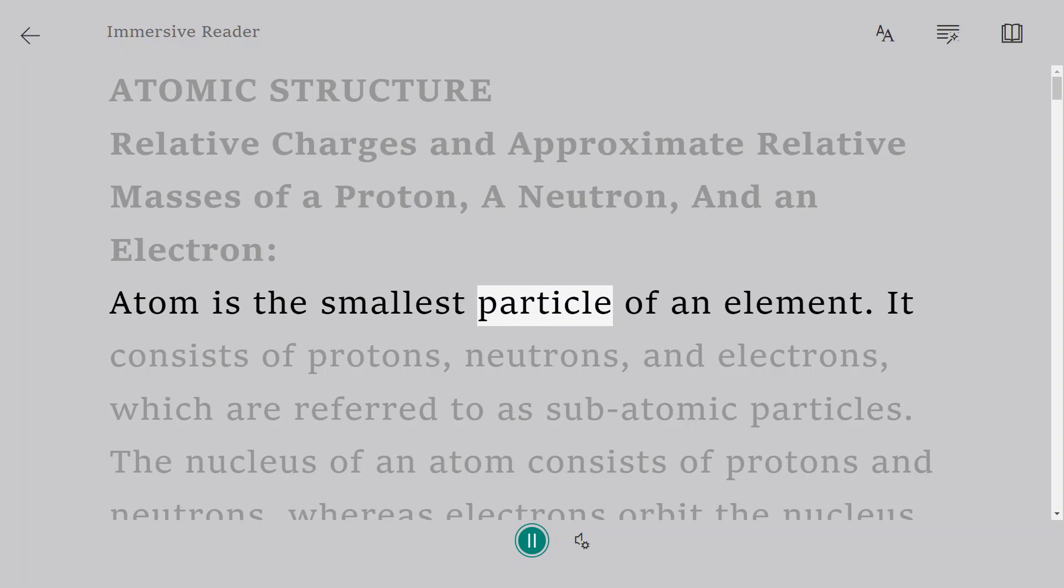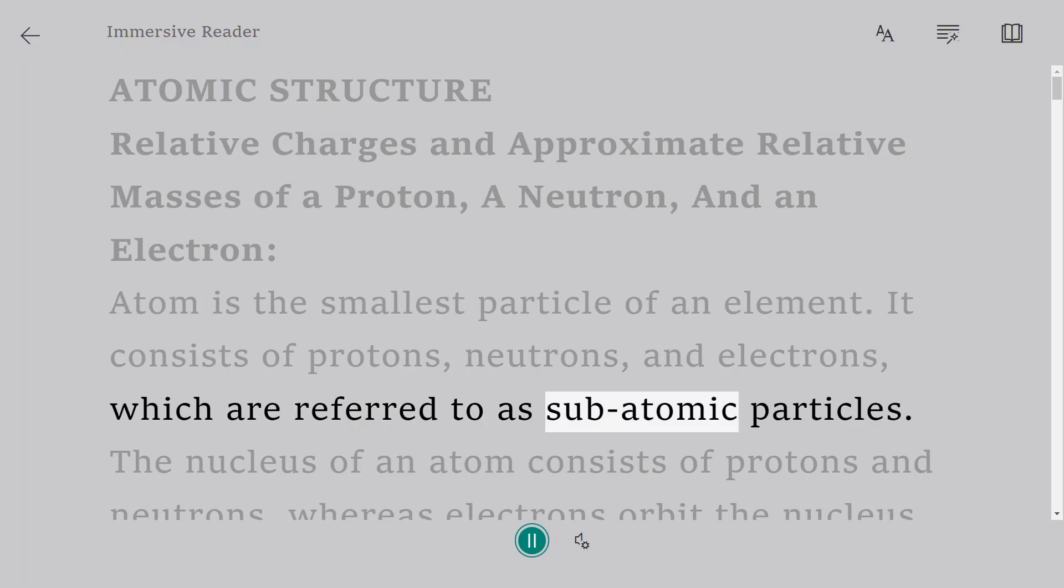Atom is the smallest particle of an element. It consists of protons, neutrons, and electrons, which are referred to as subatomic particles.